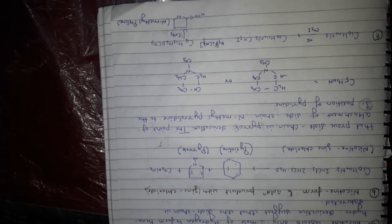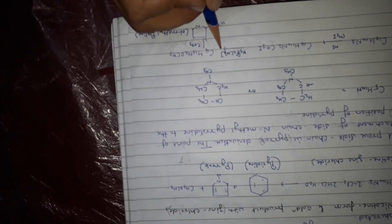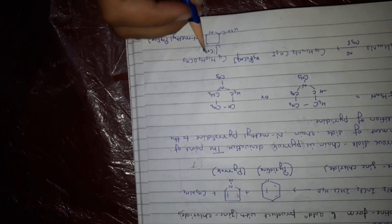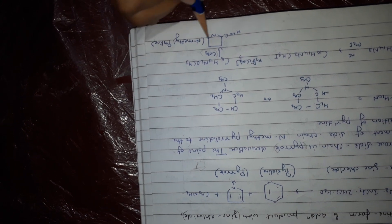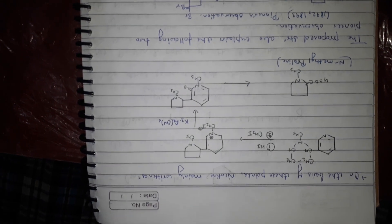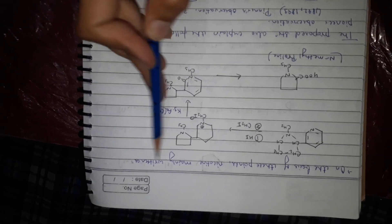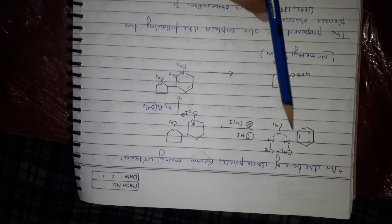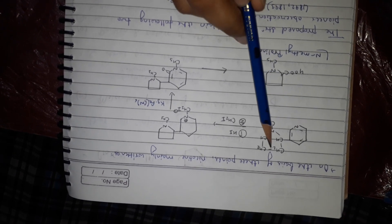On K3Fe(CN)6 it becomes OCH3, and chromium trioxide gives N-methyl pyrrolein. On the basis of these points, nicotine is mainly written as nicotine. This is nicotine and this is pyridine type, this is pyrrole type.